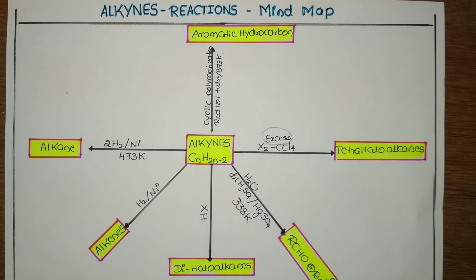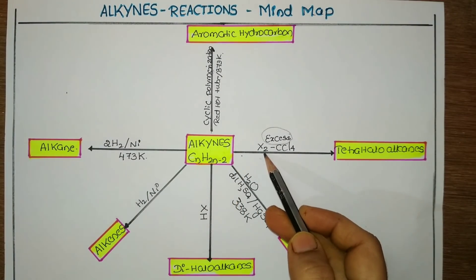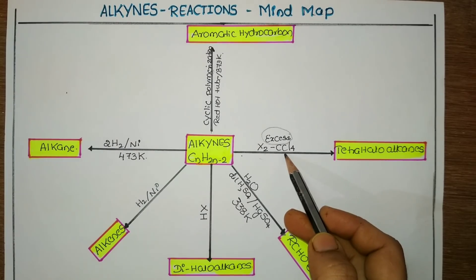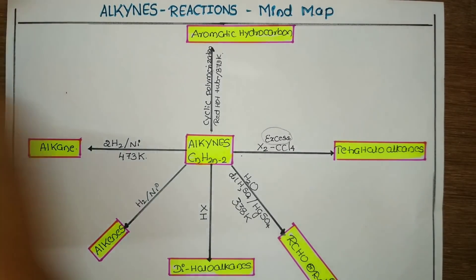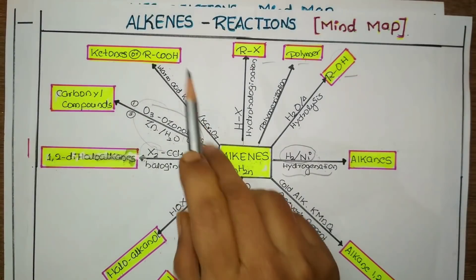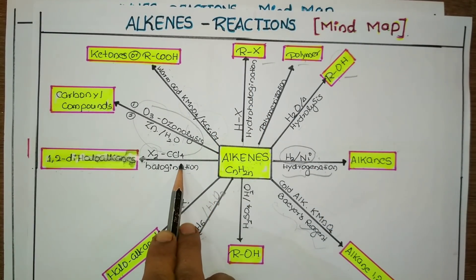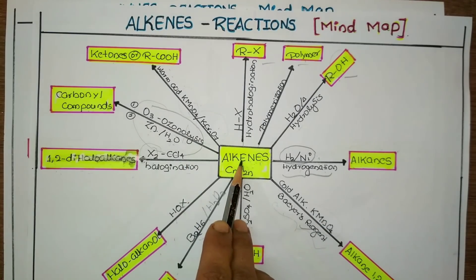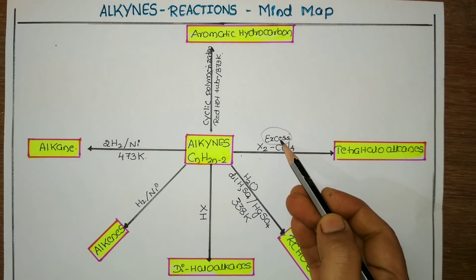Checking the reactions of alkynes, the first method is when alkynes are treated with excess halogen in presence of carbon tetrachloride as a solvent. It gives tetrahalo alkynes. You can compare this with alkyne reactions where I used halogen in presence of CCl4. Alkynes when treated with halogen give dihalo alkanes, but here the difference is I am using the word excess.